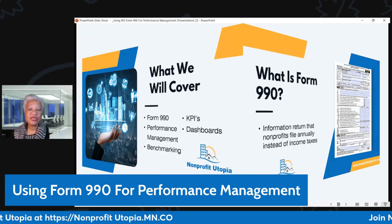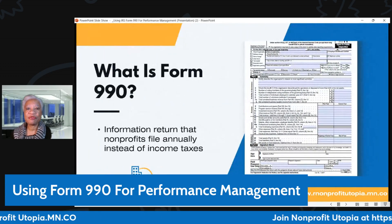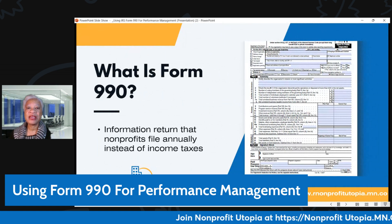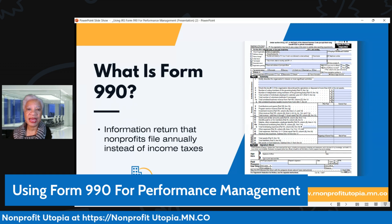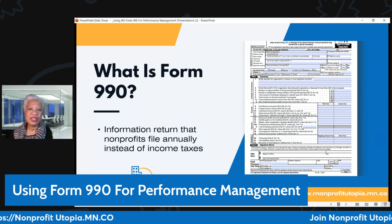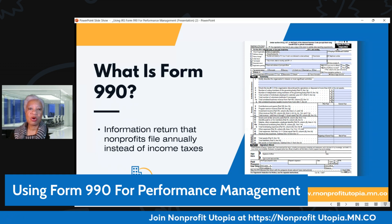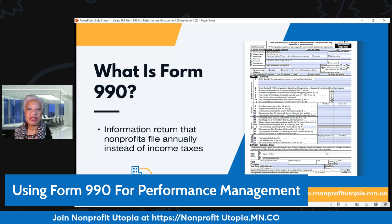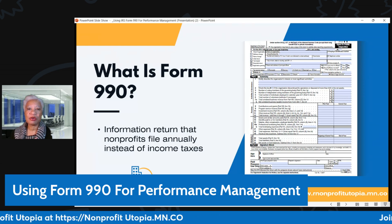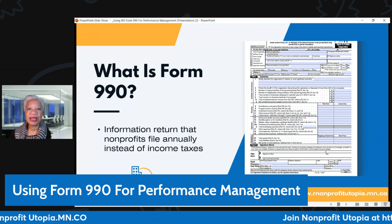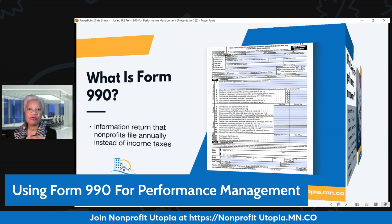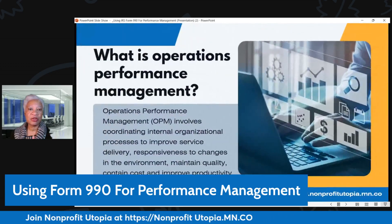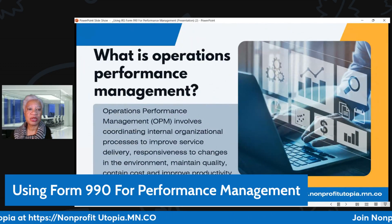So what is Form 990? Form 990 is an informational return. That means you're disclosing information about the organization — the organization's finances, management practices, policies and procedures, governance practices, and the people who work for you at the very highest levels. You have to disclose a lot of information in exchange for getting that tax-exempt status. You file this annually in lieu of 1040s that individuals as well as for-profit organizations have to file.